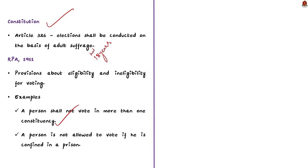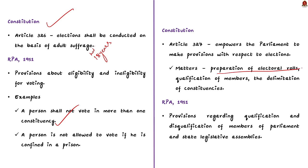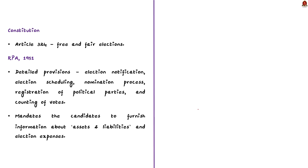Fourth, the Constitution under Article 327 empowers Parliament to make provisions with respect to elections — related to preparation of electoral rolls, qualification of members, delimitation of constituencies, and any other matters. Based on this provision, Parliament enacted RPA 1951, which outlines provisions regarding qualification and disqualification of members of Parliament and legislative assemblies. Fifth, the Constitution under Article 324 simply mandates conducting free and fair elections entrusting this role to the Election Commission. Whereas detailed provisions regarding election notification, scheduling, nomination process, registration of political parties, and counting of votes are dealt with by RPA 1951. The act also ensures fair elections by mandating contesting candidates to furnish information about assets, liabilities, and election expenses.